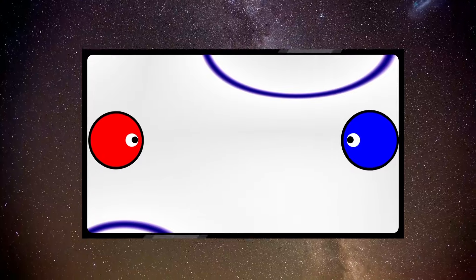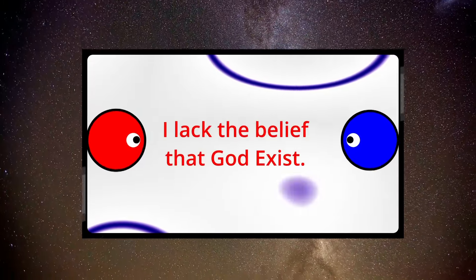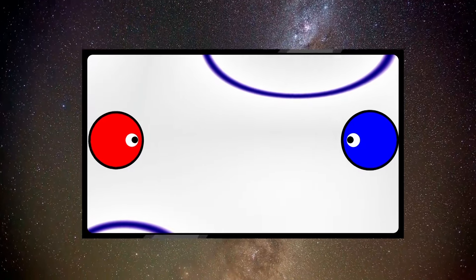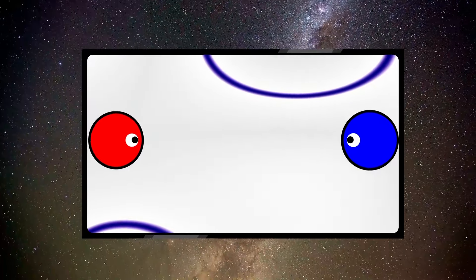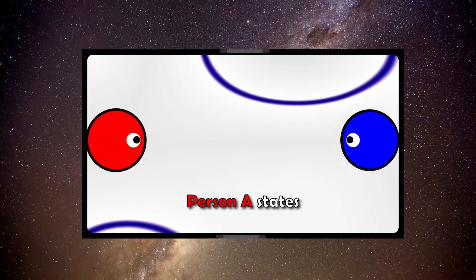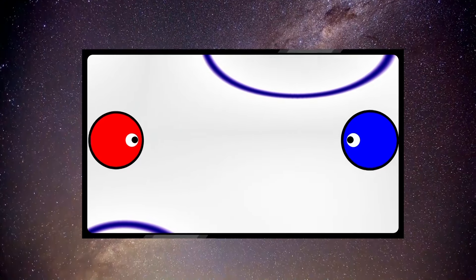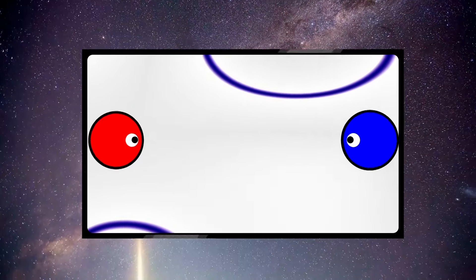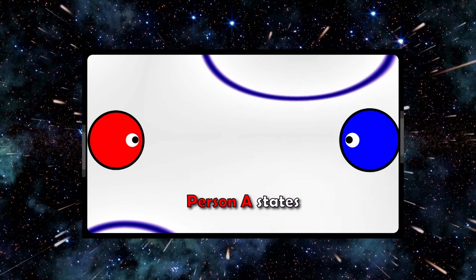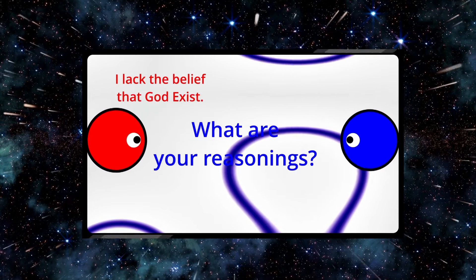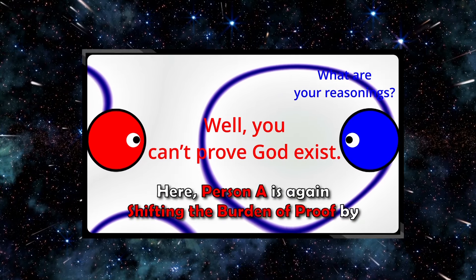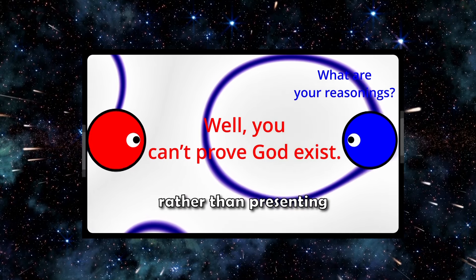If someone says, 'I lack the belief that a God exists,' they don't claim anything about a God. It is a claim about the personal belief situation of the individual who makes the claim. So if we would ask this person to prove this claim, they don't have to prove anything about a God — they only need to prove that they don't believe, which is pretty hard to prove 100%. But this person could produce, for example, a long history of writing and public conversations in which they have repeatedly stated and explained that they don't believe. So the claim 'I lack the belief that a God exists' doesn't claim anything about any God — it only says something about the person who makes the claim. In this new example, person A states, 'I lack the belief that God exists.' Person B responds, 'What are your reasonings?' Person A continues, 'Well, you can't prove God exists.'